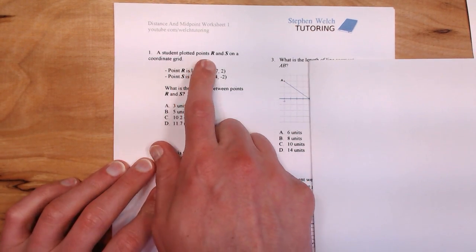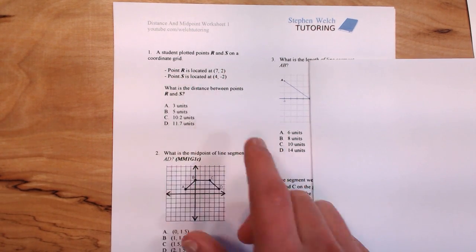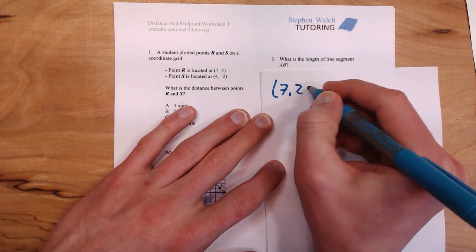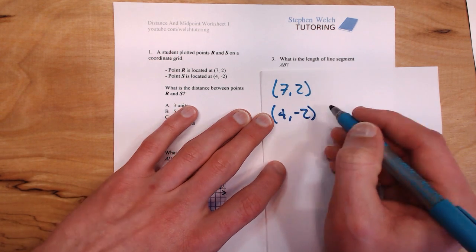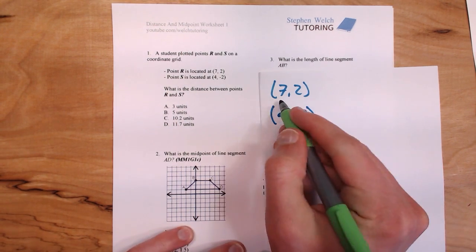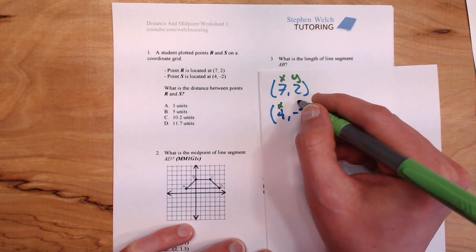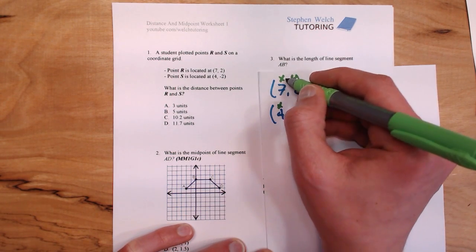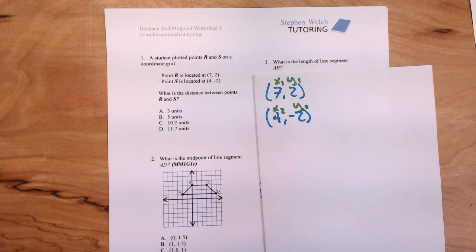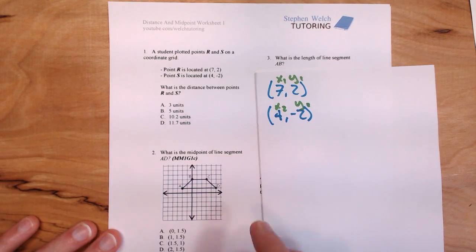The first problem says a student plotted points R and S on a coordinate grid. Point R is at (7, 2), and point S is at (4, -2). Whenever we're given an ordered pair, our first number is always x, and our second number is always y. Because this is the first point, I'm calling this x1 and y1, and this x2 and y2. It doesn't actually matter which one is 1 and which one is 2, but it does matter that x comes before y in both cases.